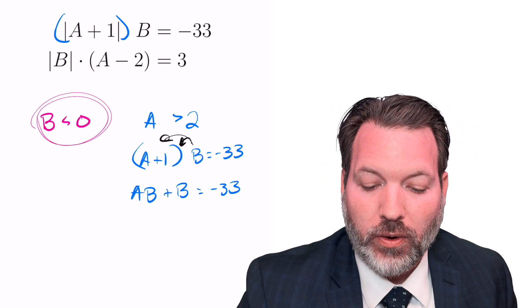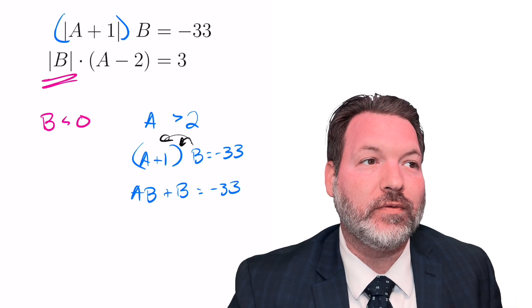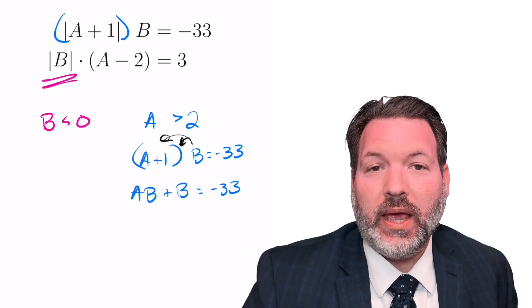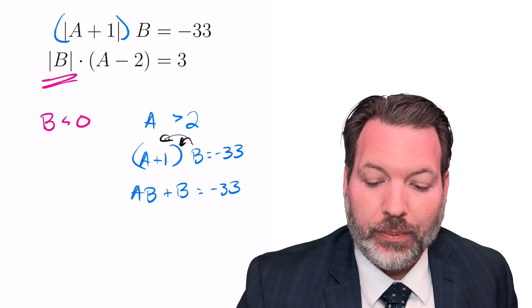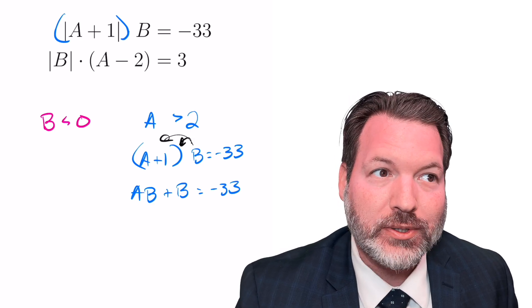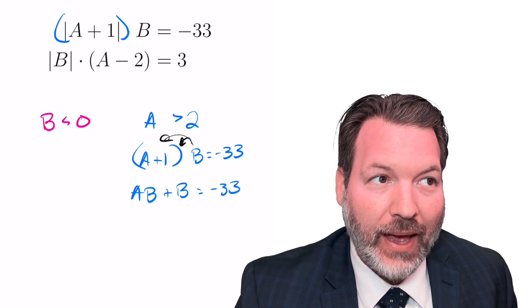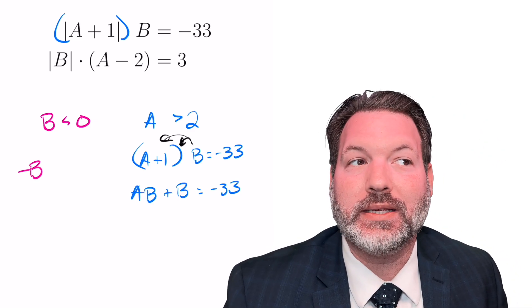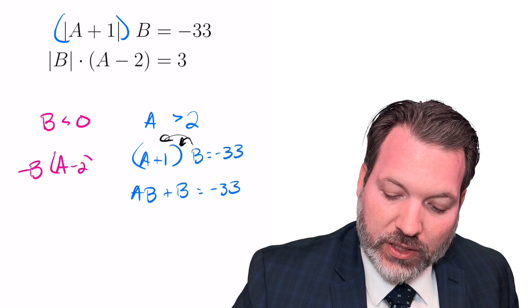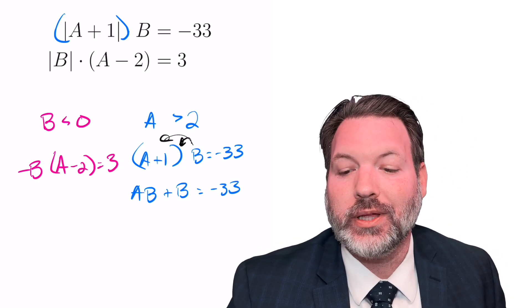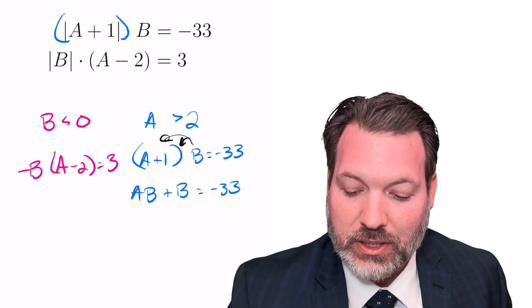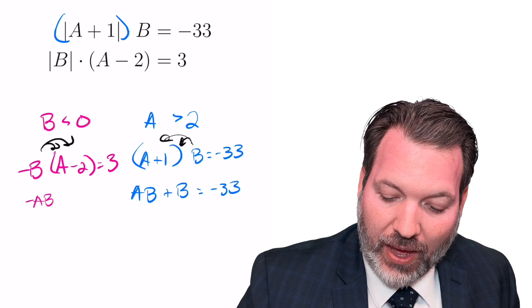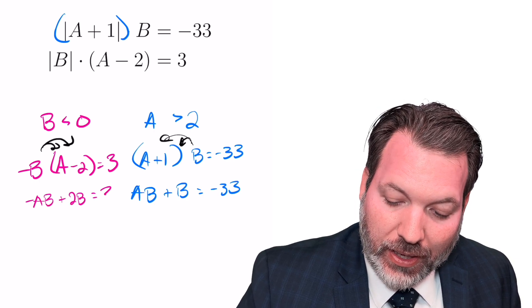Going into the second equation, though, we know b is negative. So another way to think about the absolute value of a negative is it's actually going to cancel out that negative somehow. The way that you cancel out a negative is by multiplying by another negative. So we can actually treat the absolute value of a known negative quantity as simply the negative of that quantity. In this case, simply treating it as negative b. That negative b, of course, is being multiplied by a minus 2, and the result there is 3. So we're going to do the same thing we did a second ago. We're going to engage in some distribution, and that's going to give us negative ab plus 2b is equal to 3.